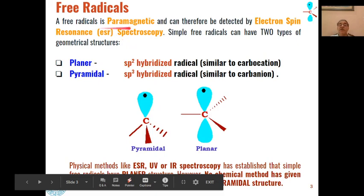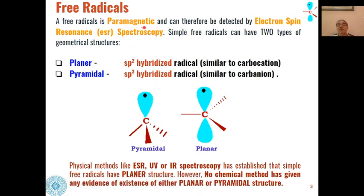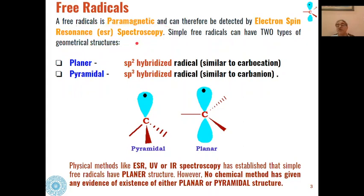Free radicals are paramagnetic species because all electrons are not paired and they can be detected by electron spin resonance spectroscopy. They can be very well detected by ESR, which is also known as EPR.